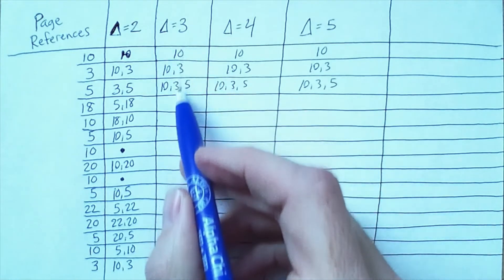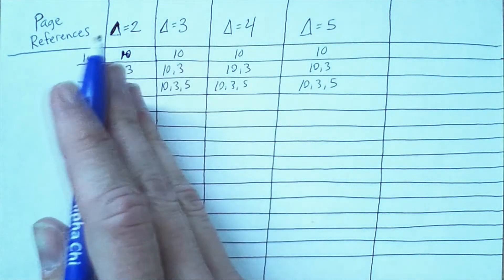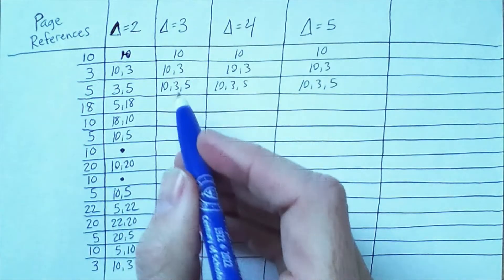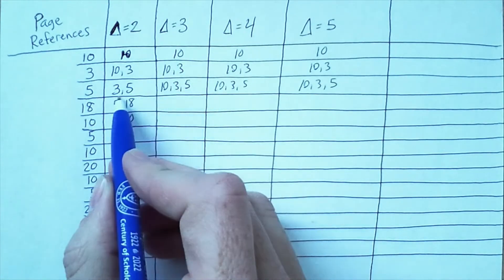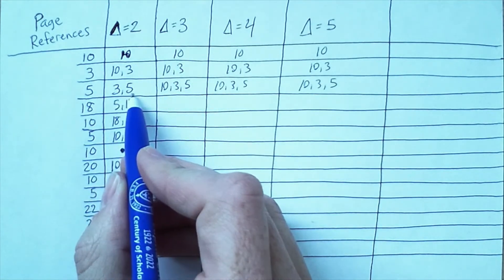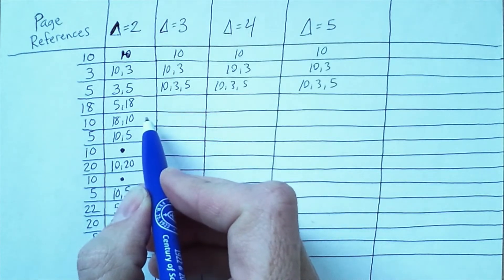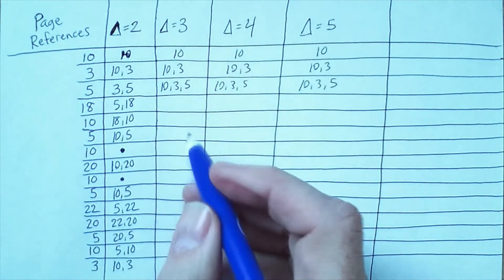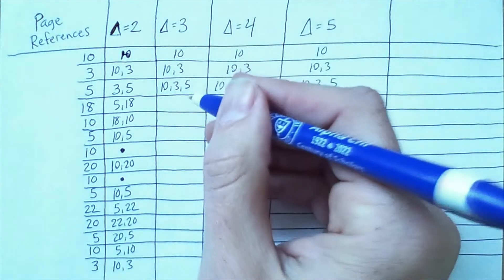Now note that this is a set, so the order of the elements doesn't matter, even though I've been writing them in a certain order. So that's why the set is the same here—it has the same elements 10 and 5. But next we access 20, and so it changes again to 10, 20.